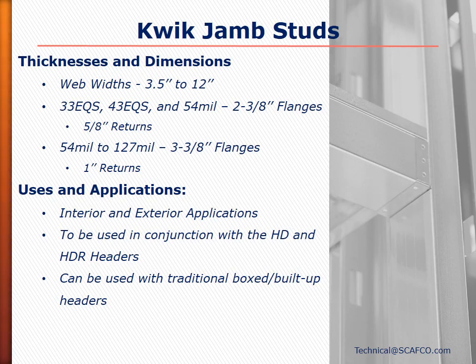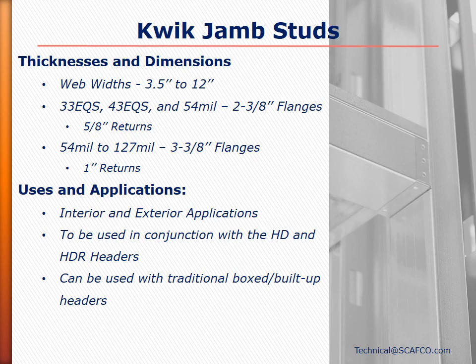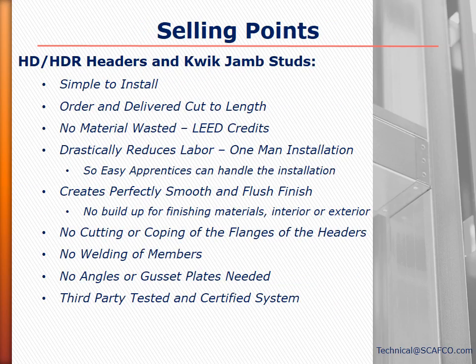The typical boxed or back-to-back configurations require added labor and installation time due to screwing, welding, or other required attachments. The quick jams are wide-flange studs specifically designed for the loads seen at a typical door or window opening. They come in web widths from 3.5 inches up to 12 inches. Available thicknesses are 33, 43, 54, 68, 97, and 127 mil. The 33, 43, and 54 mil thicknesses have a 2-3/8 inch flange, and the 54, 68, 97, and 127 mil thicknesses have a 3-3/8 inch flange.